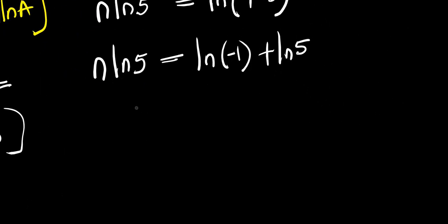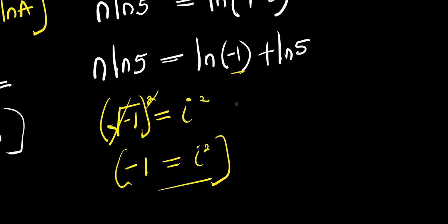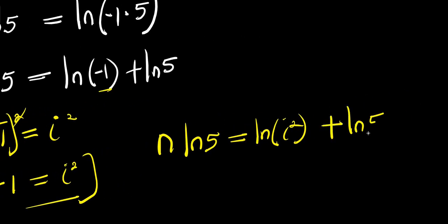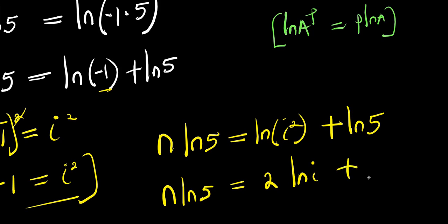Now recalling this property of complex numbers: square root of negative 1 equals i, squaring both sides gives negative 1 equals i squared. Applying this here, natural log of negative 1 is natural log of i squared, which equals 2 times natural log of i. So we have n times natural log of 5 equals 2 times natural log of i plus natural log of 5.